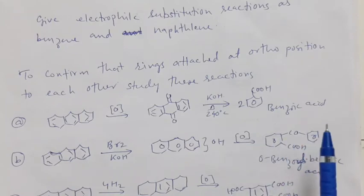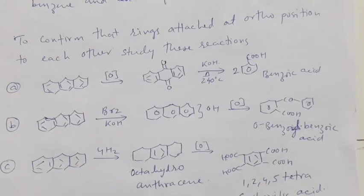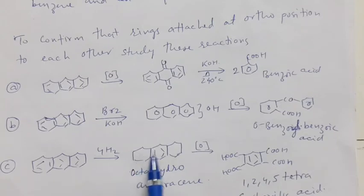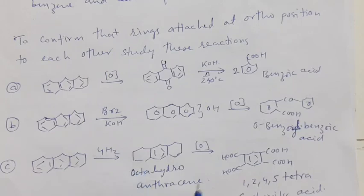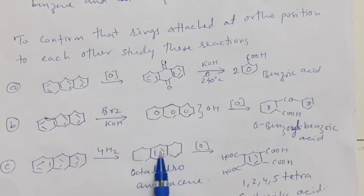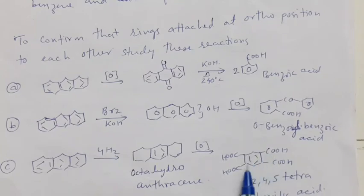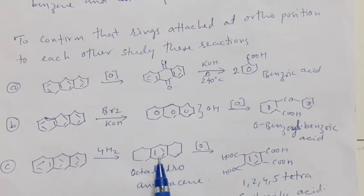To determine whether the third middle ring is aromatic, anthracene is reacted with hydrogen atoms to give octohydroanthracene, in which the two end rings are reduced. On oxidation of this octohydroanthracene, where the middle ring is the aromatic ring, it gives 1,2,4,5-tetracarboxylic acid. The formation of 1,2,4,5-tetracarboxylic acid confirms that the middle ring is also aromatic.